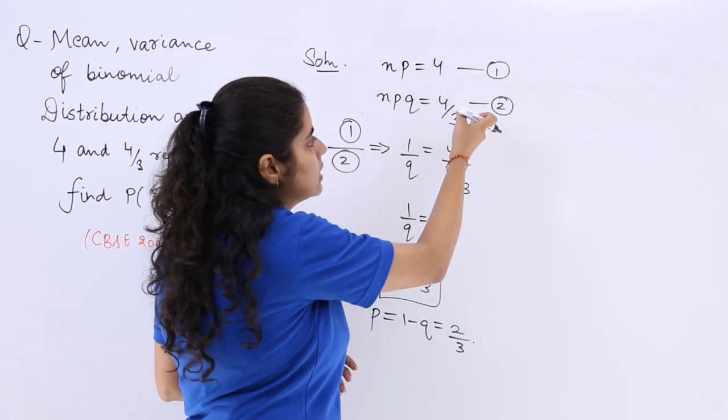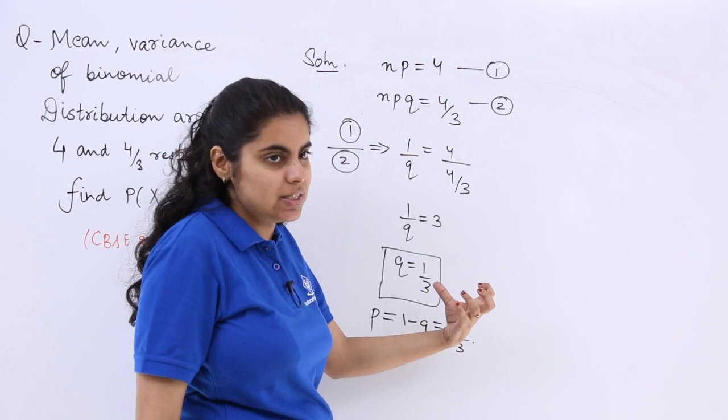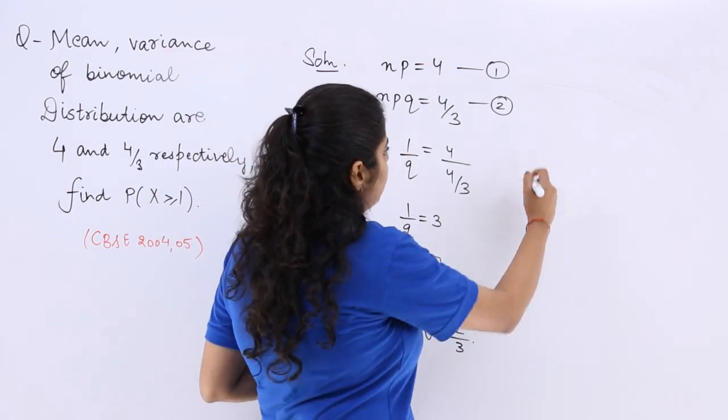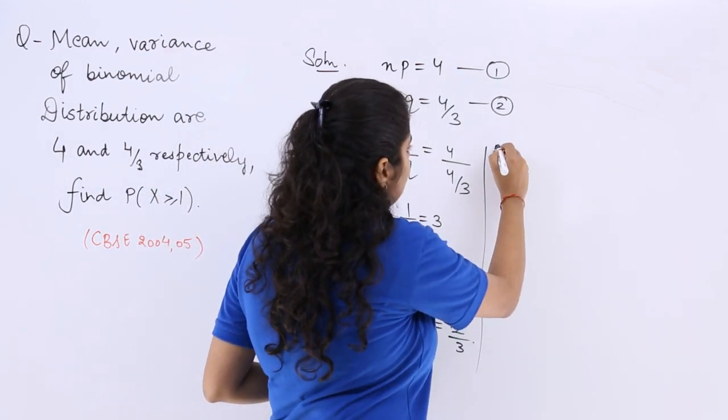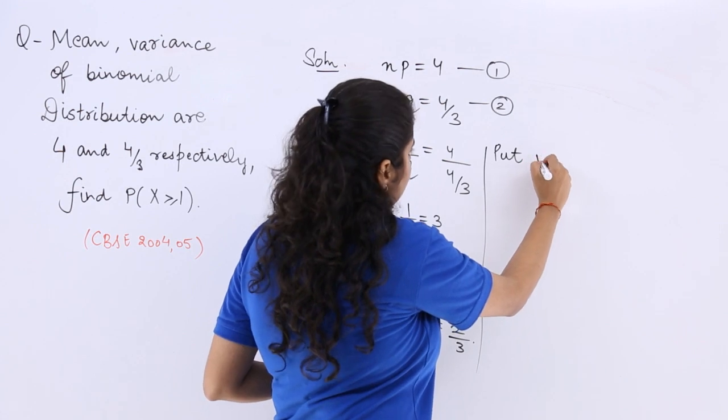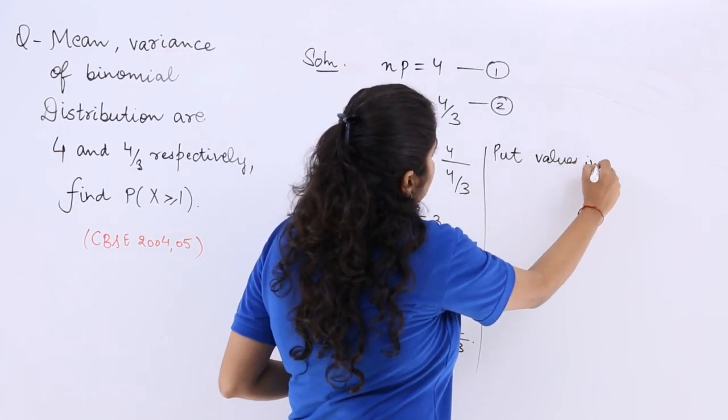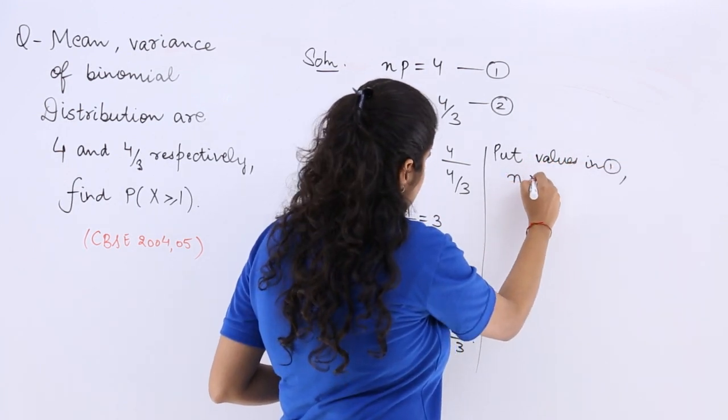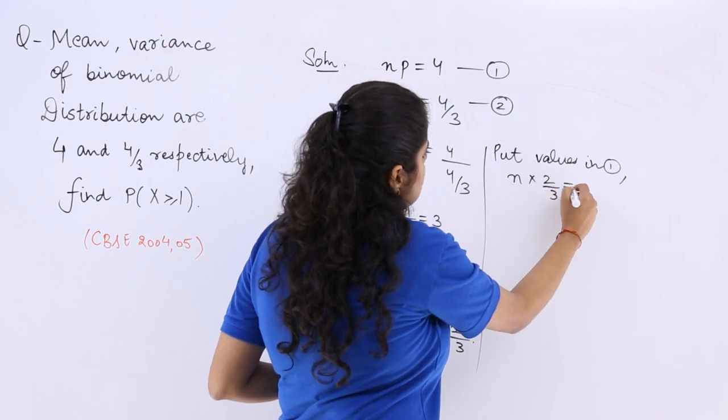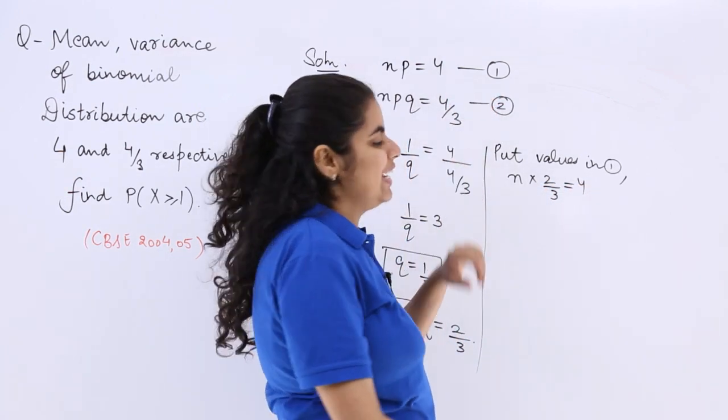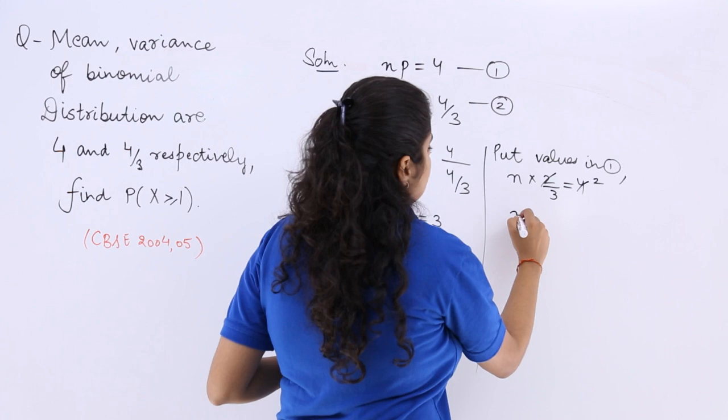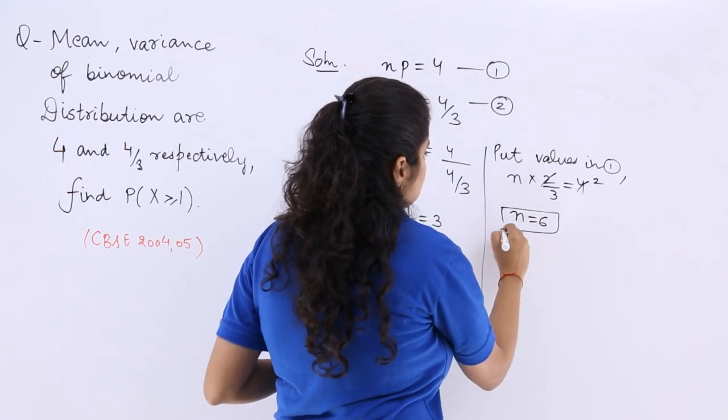Now simply put in these equations, any of these equations. So suppose I put, now the further part of the solution, put values in equation number 1. N multiplied by P is equal to 4. So N times 2/3 equals 4, that means number of trials are 6.